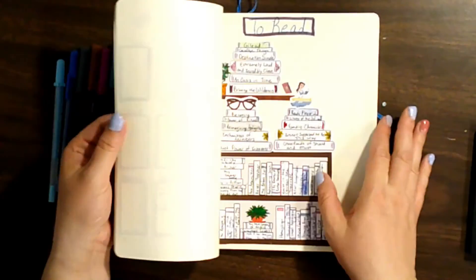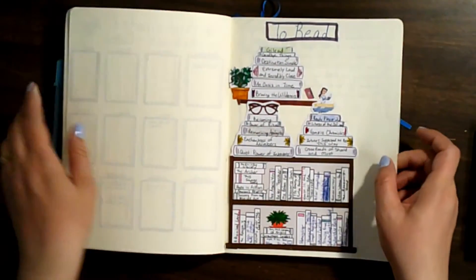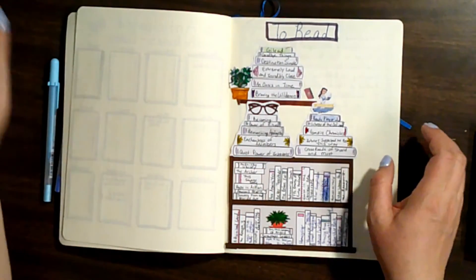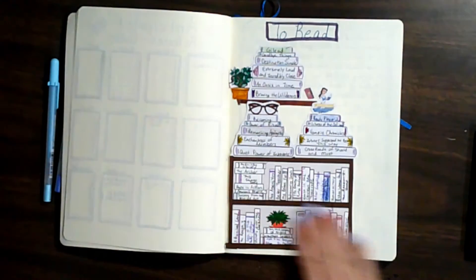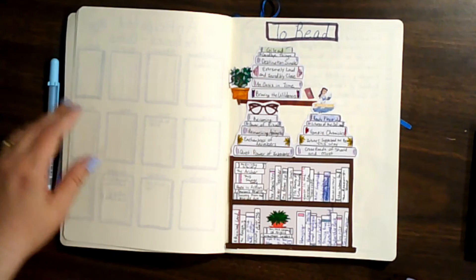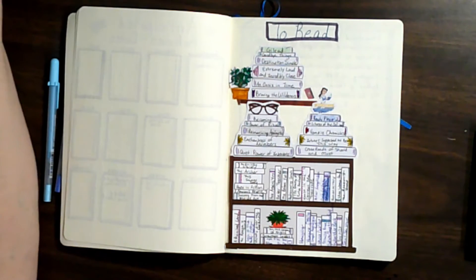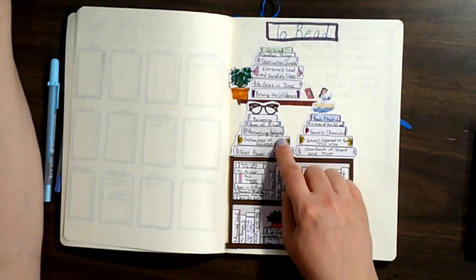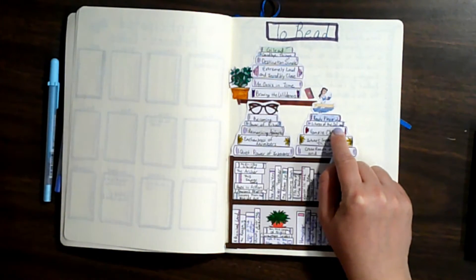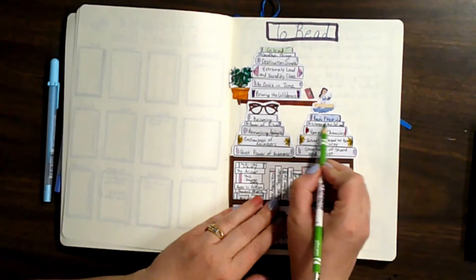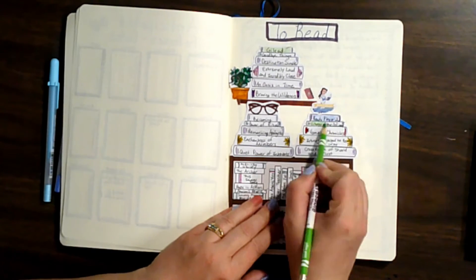Okay, so first thing we're going to do is color in the books that I read in March in my reading list. The first one that I got through was Liturgy of the Ordinary and that one had kind of a greenish color, so I'll color that in with a green pencil here.